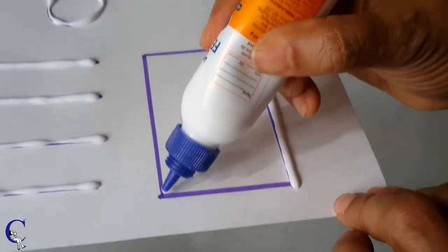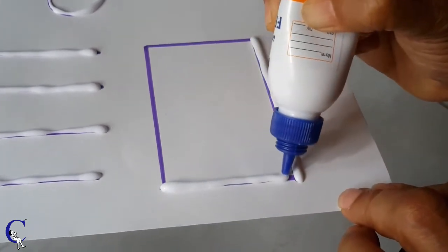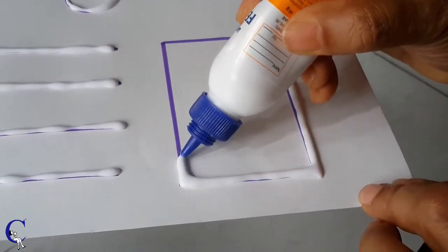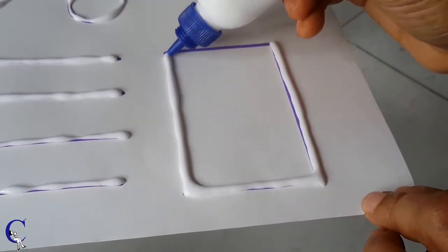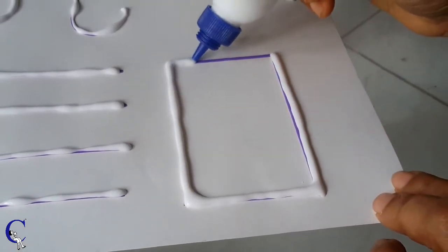Make sure that you do not squeeze too much glue at the end of the lines because glue tends to spread and these will form rounded edges instead of sharp edges.